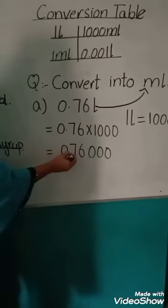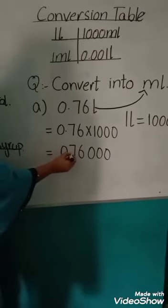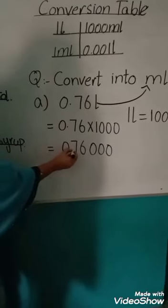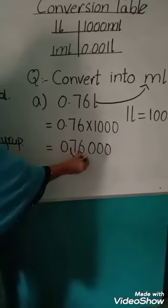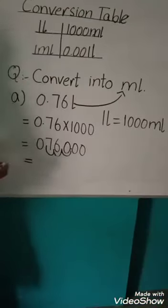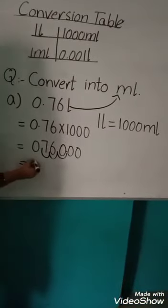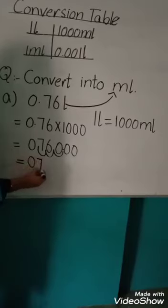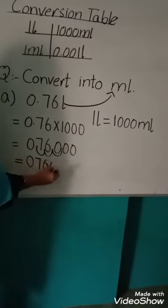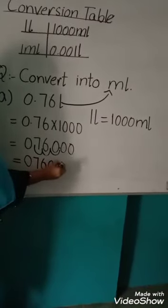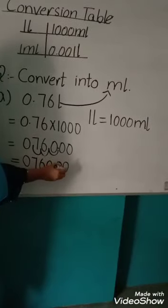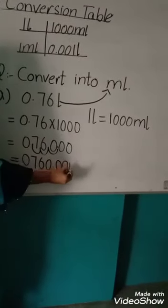So we move point 3 digits. First of all, the first point is here. Move 1, 2, and 3. Write the answer: 760.00. And also write the unit, milliliters. Thank you.